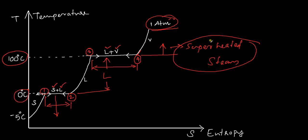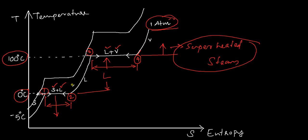Now, what happens if you repeat the process at 2 atmospheres? You will be able to generate a similar graph. You have a solid region, then a solid and liquid region, then a completely liquid region, then a liquid plus vapor region, and then a vapor-only region. So you can form as many graphs as you want at different pressure conditions, and this will be the general form of the phase change process of H2O at a specific pressure and different temperatures.